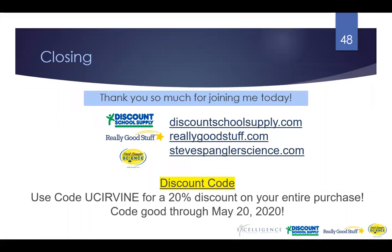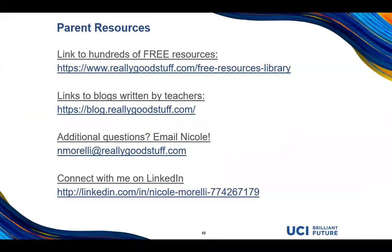We have links here for our Acceligence companies — Discount School Supply, Really Good Stuff, and Steve Spangler Science — as well as a discount code. You'll get 20% off your entire purchase through May 20th with the code UC Irvine. We also have parent resources: free resources like the Reader's Theater and worksheets are available at the link under free resources. We have links to blogs written by teachers, and you can contact me by email or connect with me on LinkedIn.